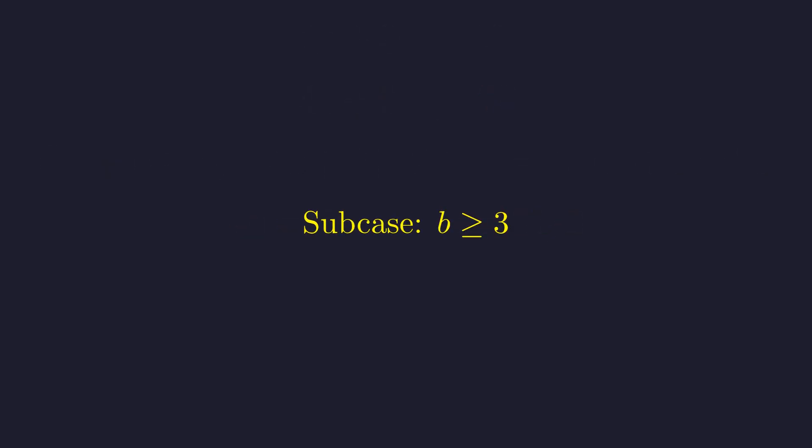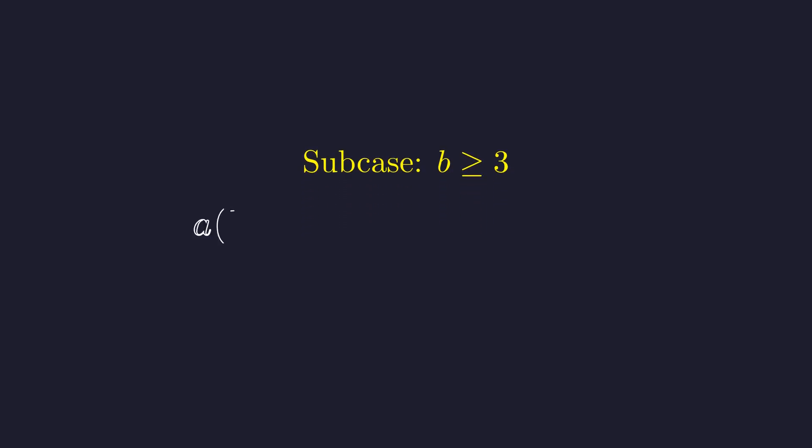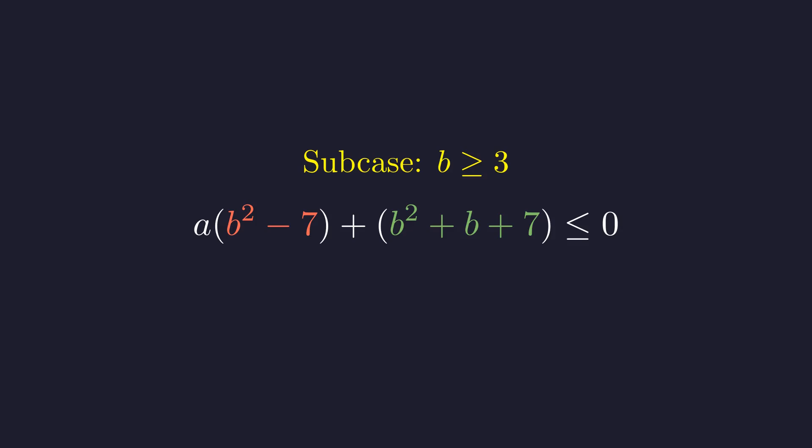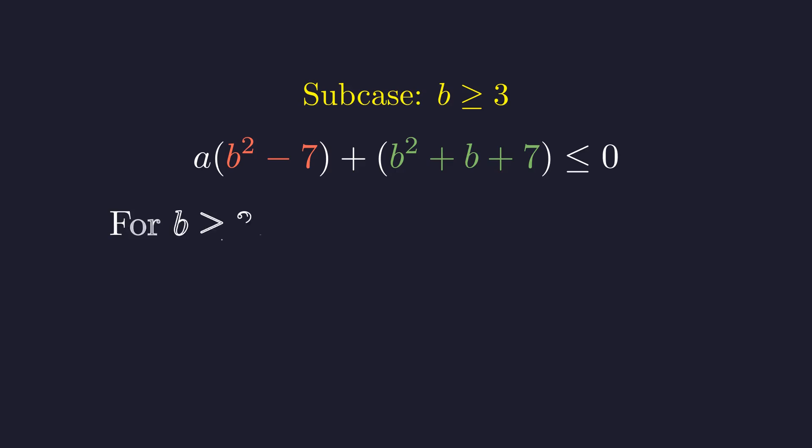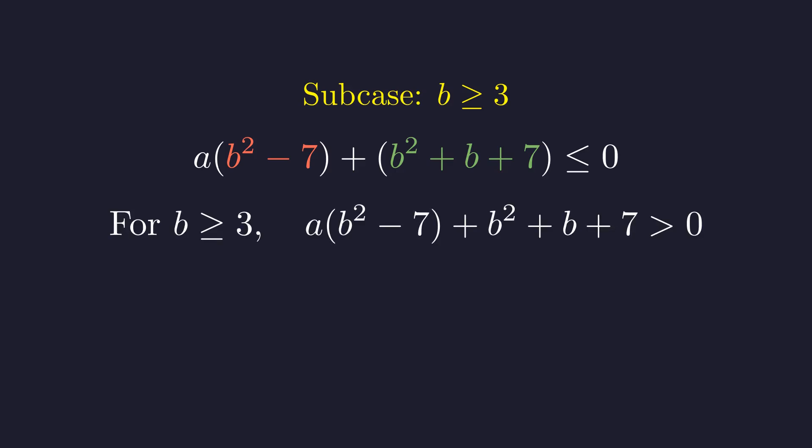Finally, we consider the subcase where b is greater than or equal to 3. Returning to the factored inequality: a times (b squared minus 7) plus b squared plus b plus 7 must be less than or equal to 0. If b is at least 3, then b squared is at least 9, so b squared minus 7 is at least 2. Since a is a positive integer, the term a times this quantity is positive, and b squared plus b plus 7 is also positive. The sum of these two positive terms is strictly positive, contradicting the inequality. Therefore, there are no solutions for b greater than or equal to 3 within case 3.